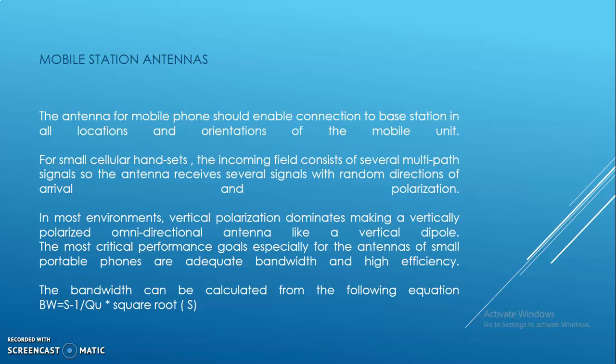For small cellular handsets, the incoming fields consist of several multipath signals, so the antenna receives several signals in random directions of arrival and polarization.